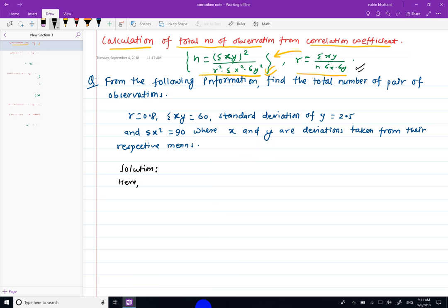r is equal to 0.8, summation xy is equal to 60, the standard deviation of y, sigma y, is equal to 2.5, and summation x squared is equal to 90.